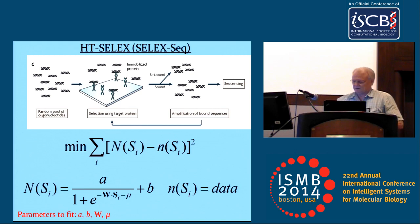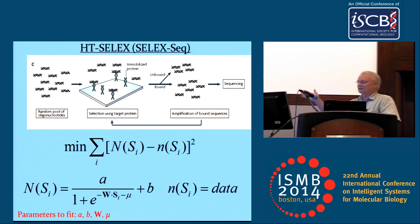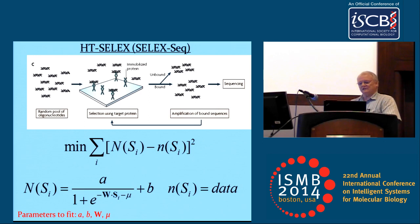You separate bound and unbound, pull out the bound fraction and sequence them, and also sequence the prior DNA so you know what the initial pool was. Then you try to get the motif by minimizing the data. There are basically four kinds of parameters: a scaling factor A, a background or nonspecific binding B, a weight matrix or more complicated function that assigns an energy dependent upon the sequence, and a parameter mu related to protein concentration. It's essentially a nonlinear regression method.